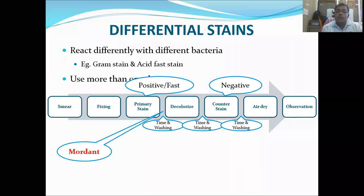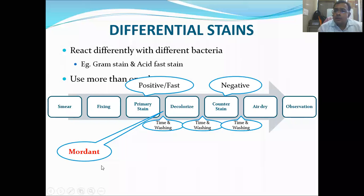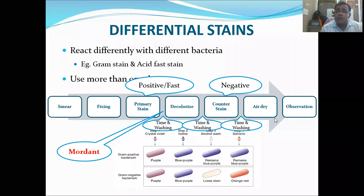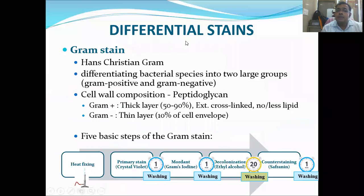Sometimes there is an additional step known as a mordant. The mordant increases the intensity of the primary stain. This step is sometimes present and sometimes absent depending on the procedure. At the end, bacteria can be observed in different colors depending on the primary stain and counter stain used.